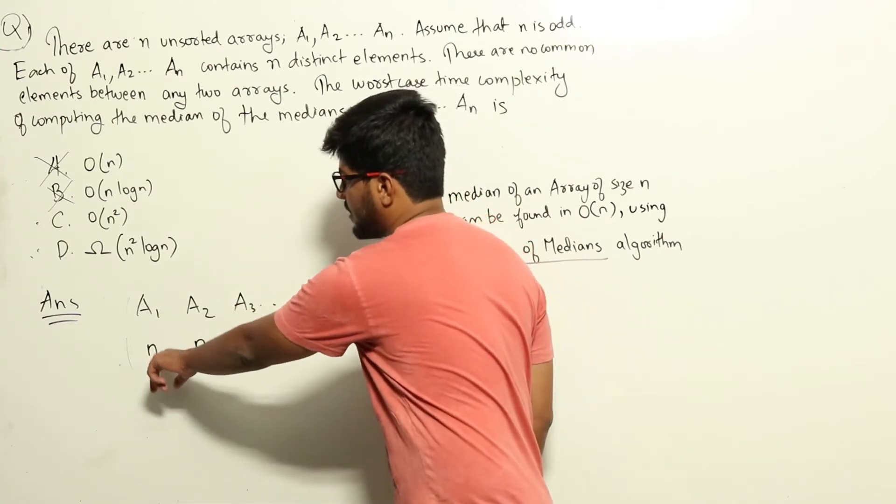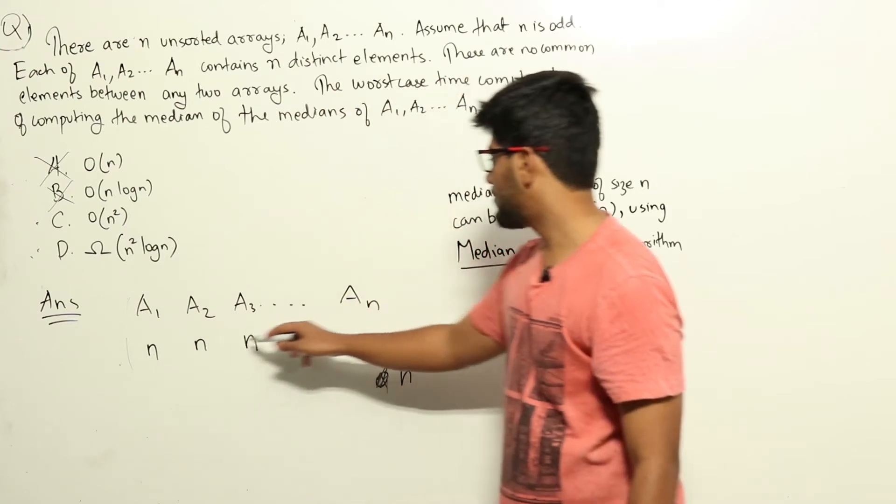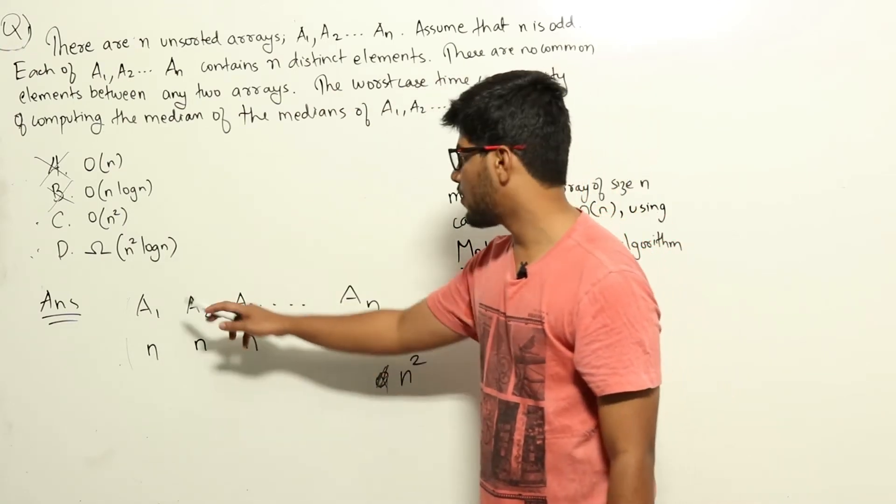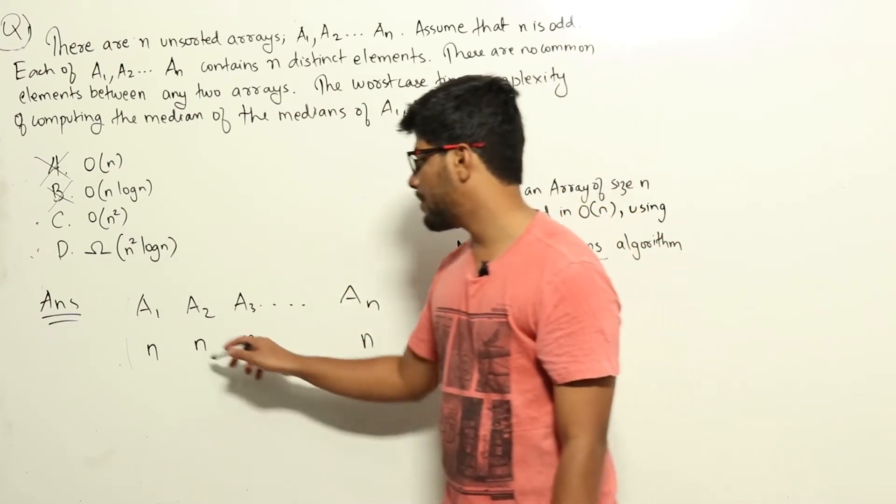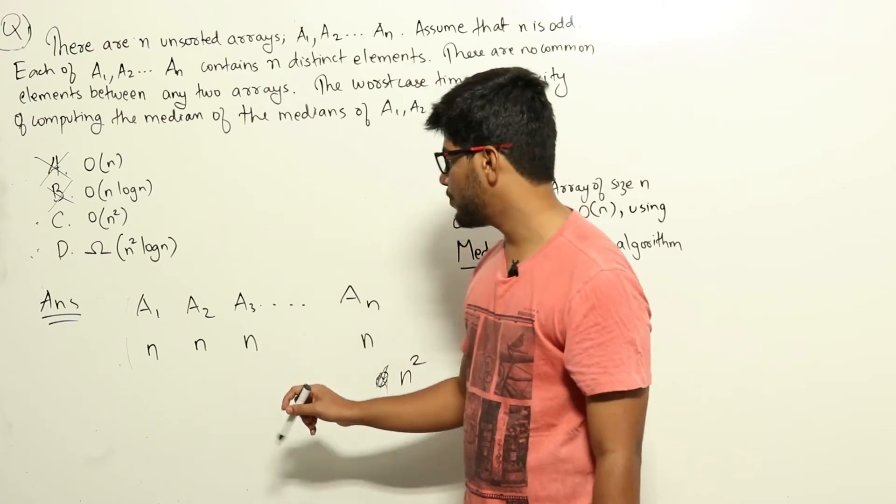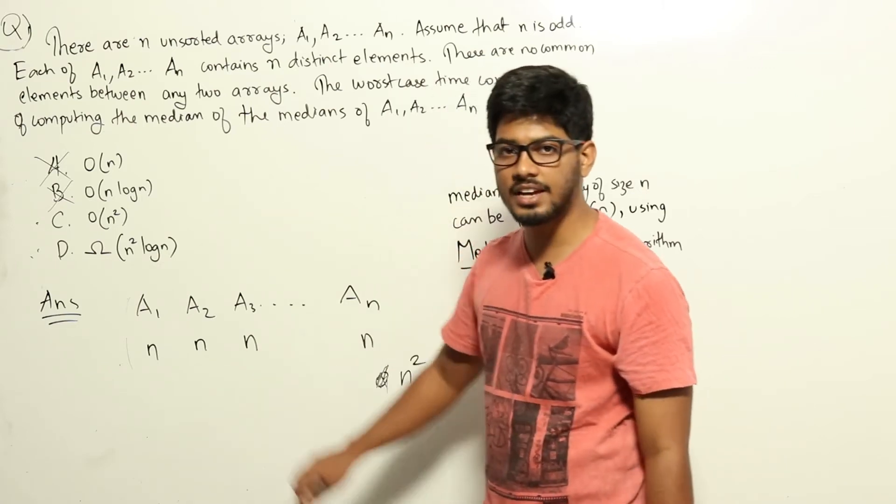Similarly, after n into n log n time, we will get all of those medians. There will be n medians in total. Additionally, we just need to do n log n steps in order to find the median of that array.